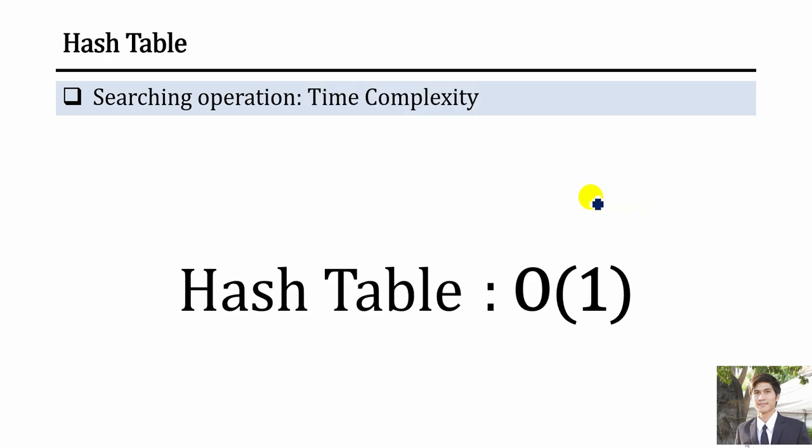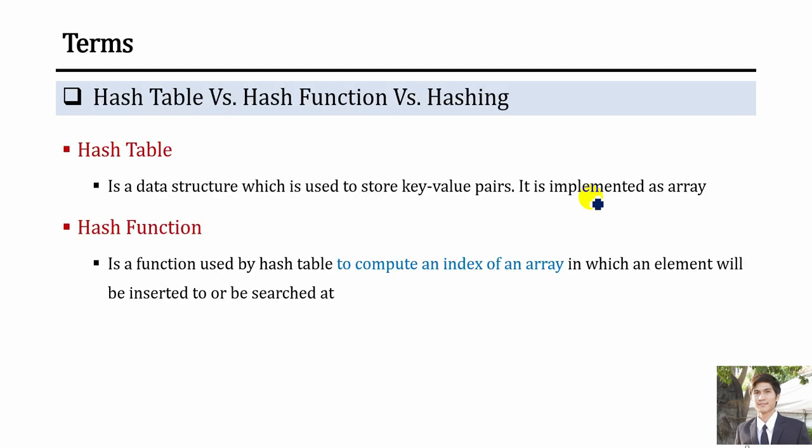However, with the hash table data structure, you don't need to loop or randomly search. You can use what we call a hash function to get your data directly without looping — it's very fast. The Big O notation here is O(1). When you want to search data inside a hash table you can find it very fast because it uses key-value pairs. Next we will talk about some terms and functions used with hash tables.